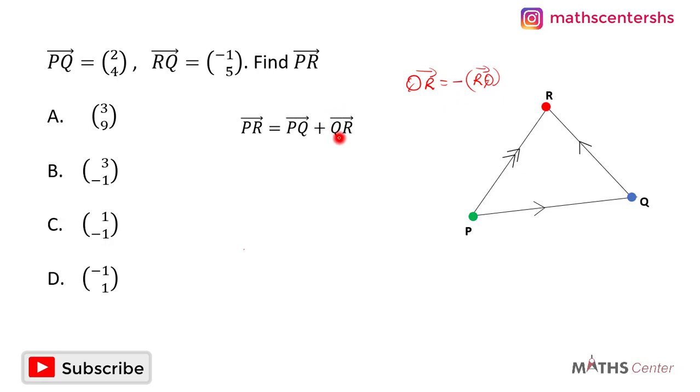So it means that we can replace the vector QR with negative RQ, and so when we do that, we will have PR is equal to PQ minus RQ. Now we can substitute what we have here into this to get the vector PR.